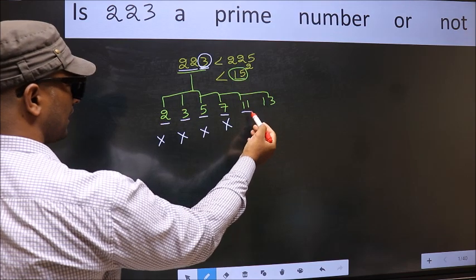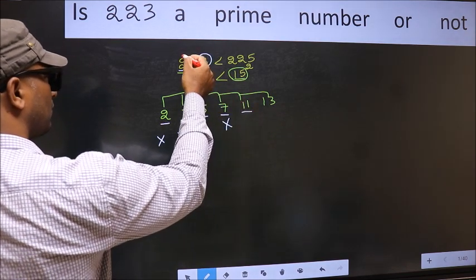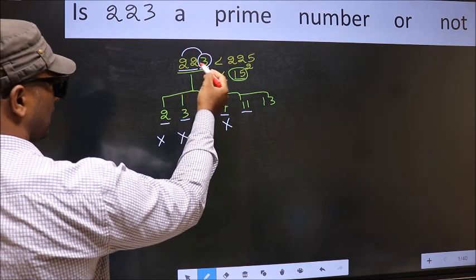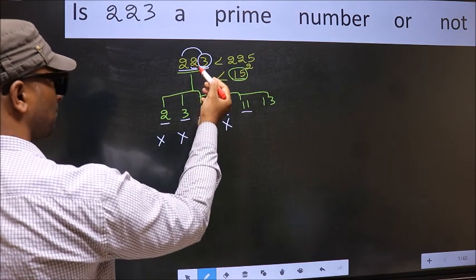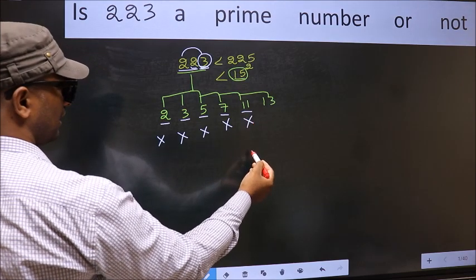Next number 11. To check divisibility by 11, add alternate numbers: 2 plus 3, 5. Subtract from this: 5 minus 2, 3. 3 is not divisible by 11 so this number also not divisible by 11.